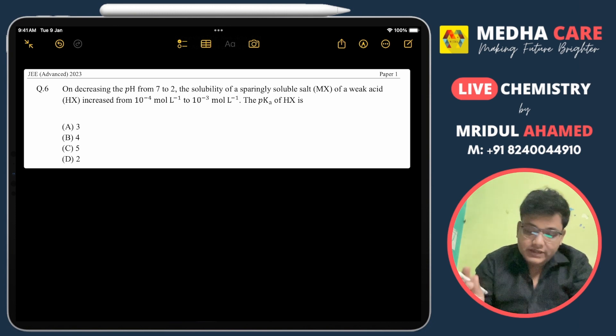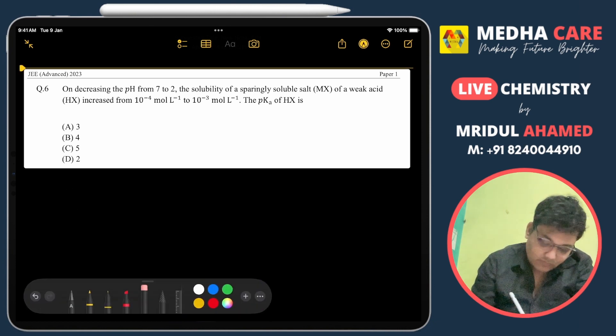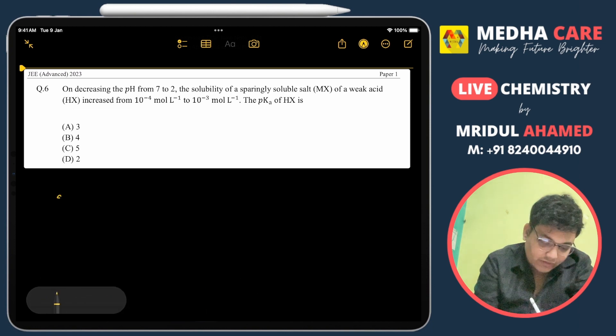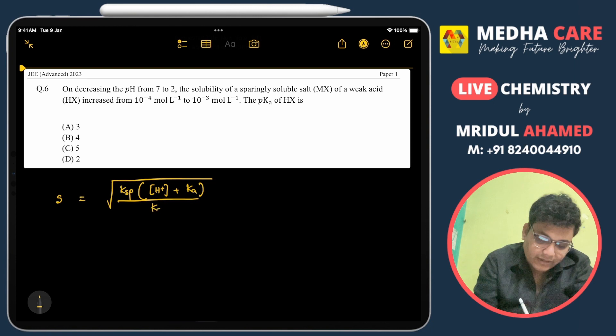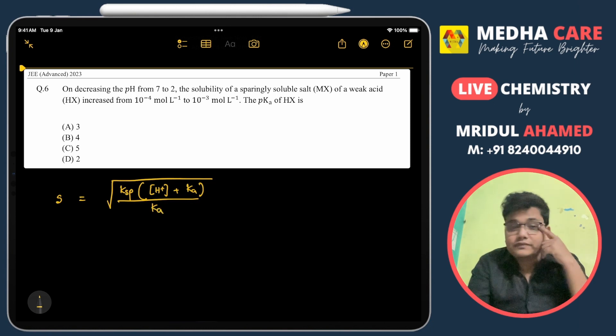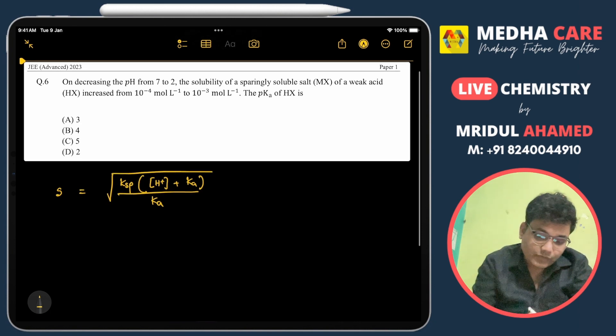I will use the equation directly here. The equation for solubility is: S equals square root of (Ksp times [H+] plus Ka) divided by Ka. That is the equation for solubility of sparingly soluble salt of weak acid.